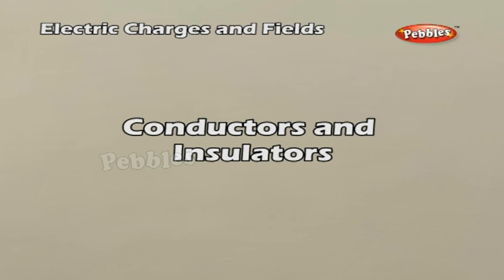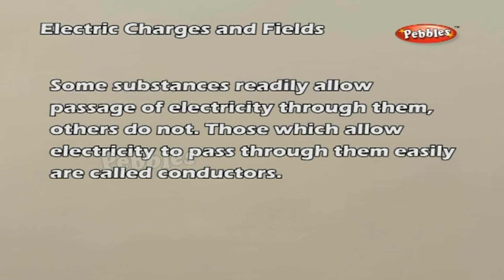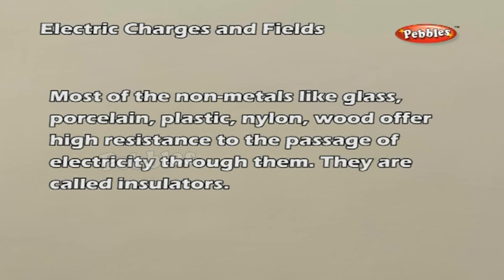Conductors and Insulators. Some substances readily allow the passage of electricity through them, others do not. Those which allow electricity to pass through them easily are called conductors. Most non-metals like glass, porcelain, plastic, nylon, and wood offer high resistance to the passage of electricity through them. They are called insulators.